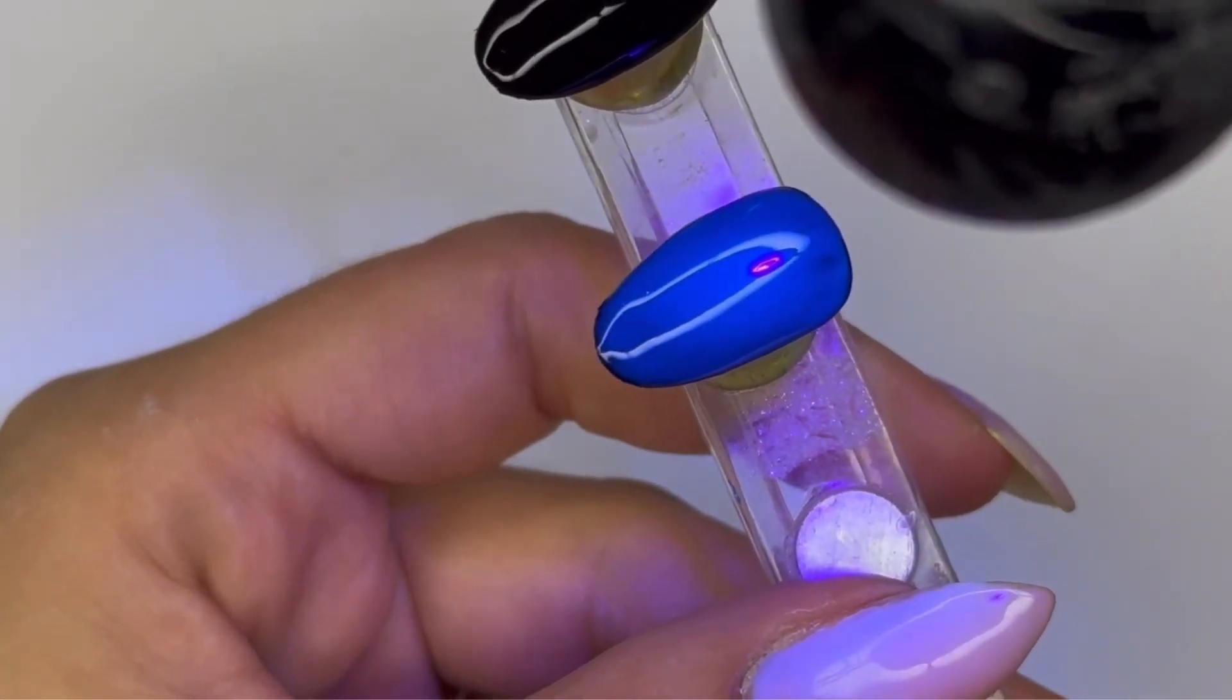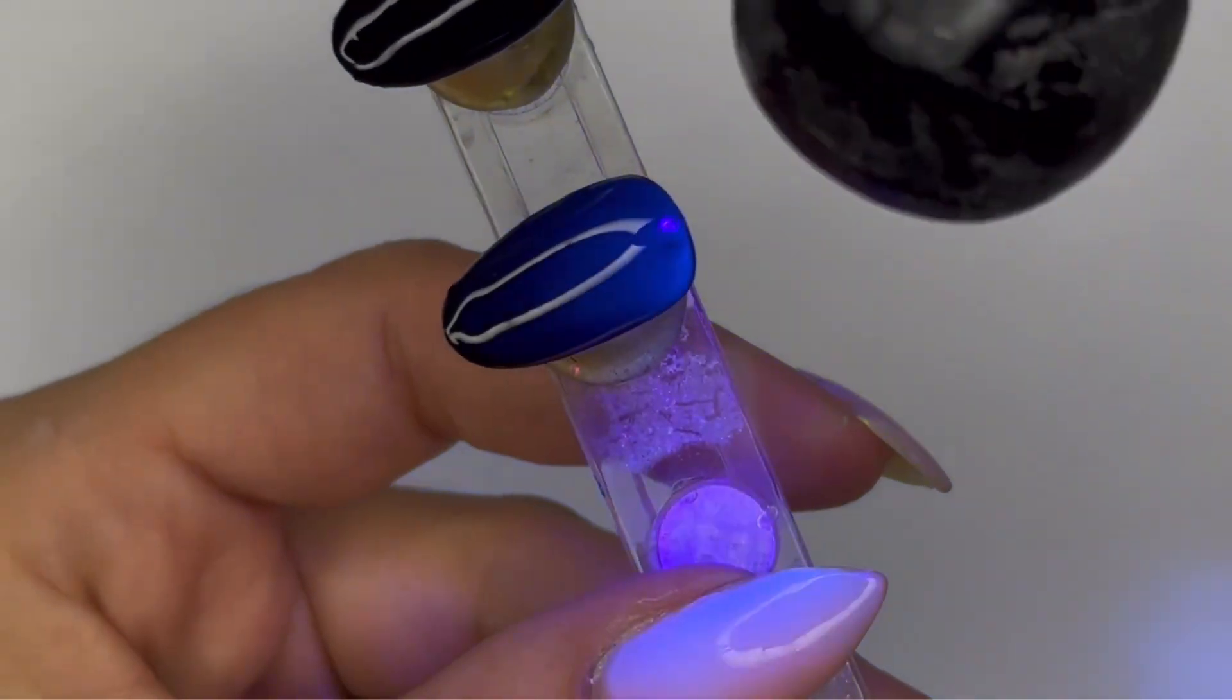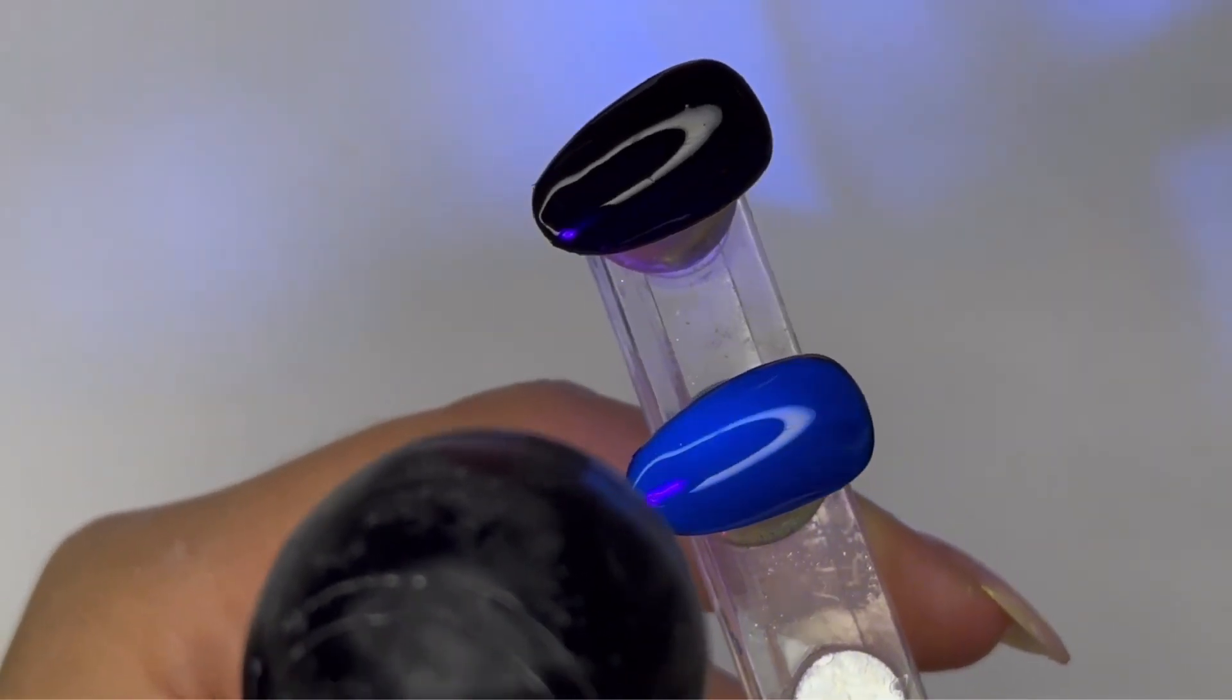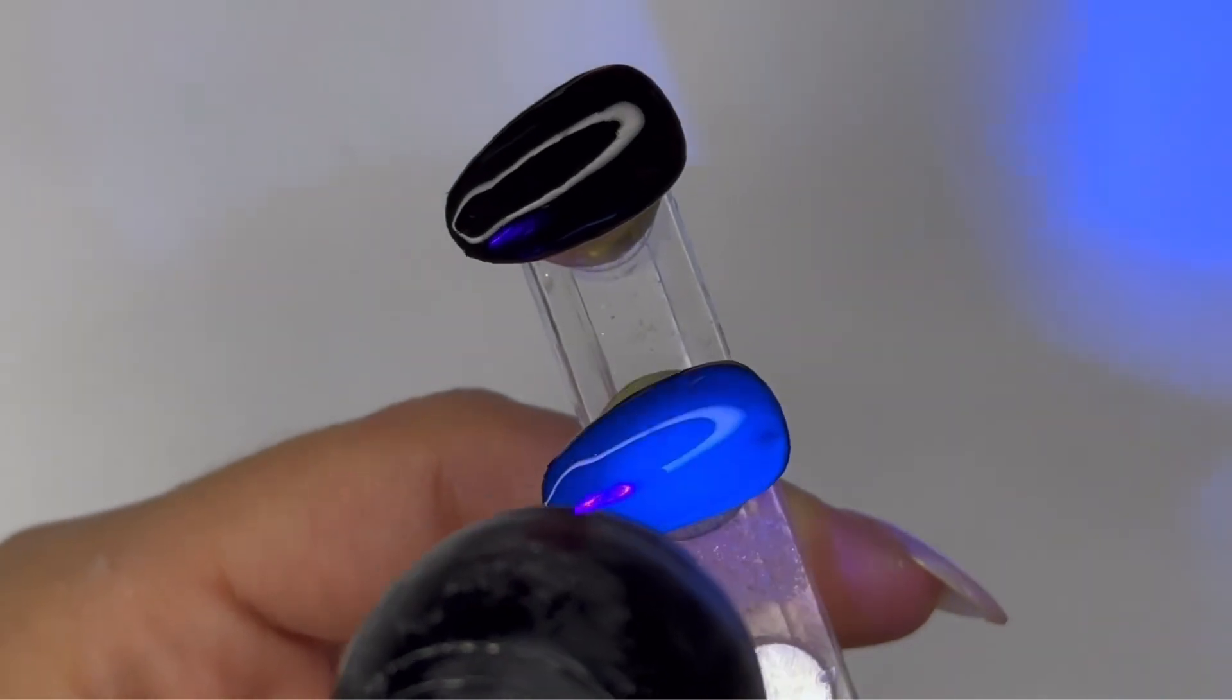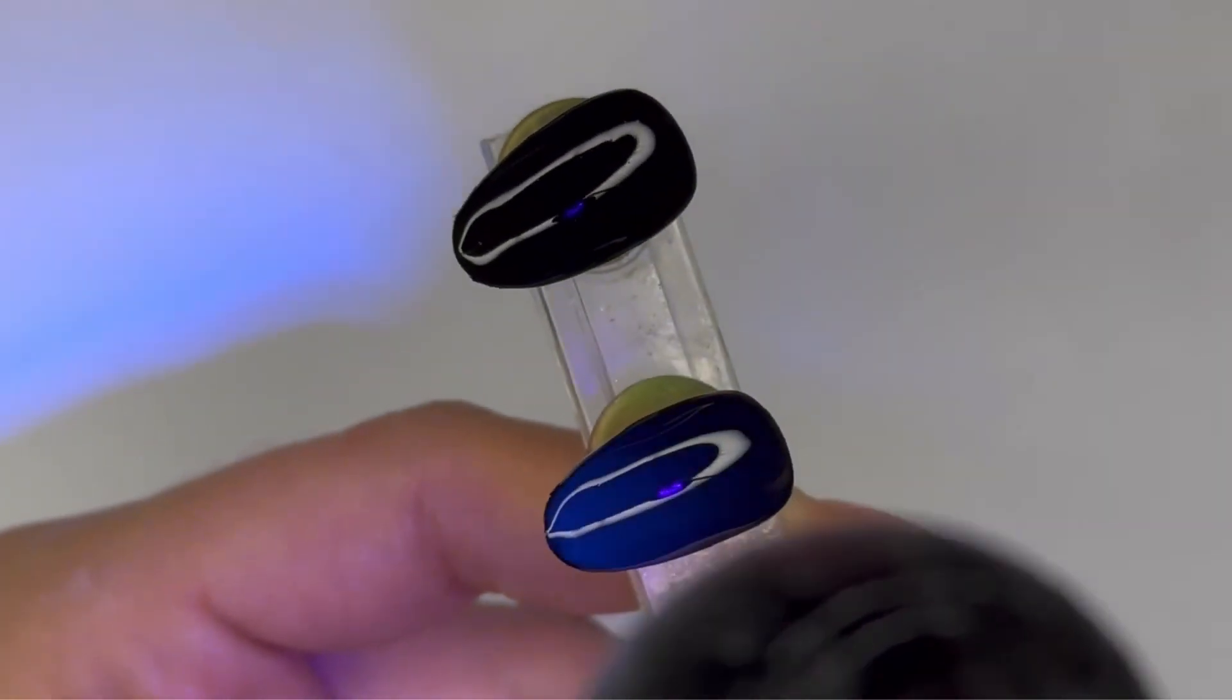I would say stay away from putting the UV top coat on dark colors if you don't want it to change in the sunlight, because I did have an issue with some of my clients where I'm guessing they looked at the black polish in the sun and it had the UV top coat and they would see it blue.